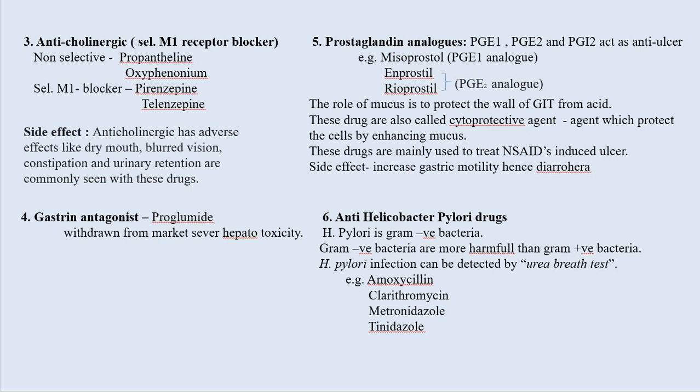Anti-Helicobacter pylori drugs: H. pylori is a gram-negative bacterium. Gram-negative bacteria are more harmful than gram-positive bacteria. H. pylori infection can be detected by the urea breath test. Drugs in this category include amoxicillin, clarithromycin, metronidazole, and tinidazole.